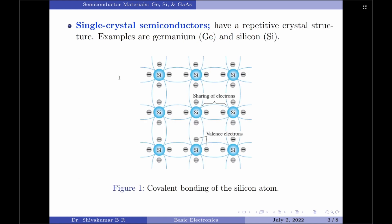Single-crystal semiconductors have a repetitive crystal structure. If you look at figure one here, which is the covalent bonding for silicon atom, you will note that the crystal structure is repeated.